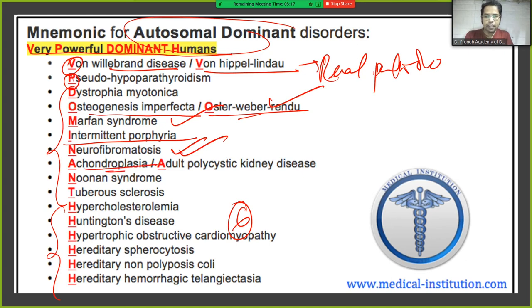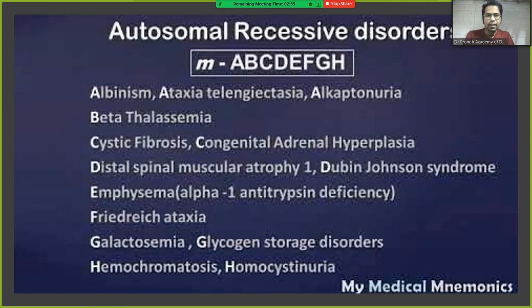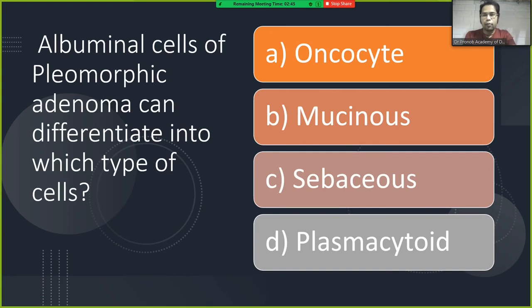Autosomal dominant disorders include neurofibromatosis, Noonan syndrome, tuberous sclerosis, Huntington's chorea, and hereditary hemorrhagic telangiectasia. Autosomal recessive disorders include albinism, ataxia, alkaptonuria, and beta-thalassemia.